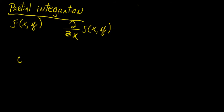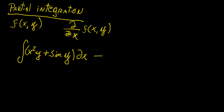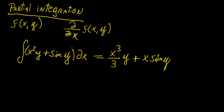Let's say we have the function x²y + sin(y), and we want to integrate this with respect to x. We treat y as a constant and integrate x, giving x³/3 times y, plus x times sin(y), because any function of y is treated as a constant. Plus a constant of integration, which must now be a function of y — so we call it g(y) as the general term.